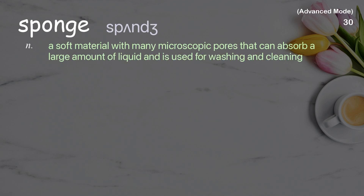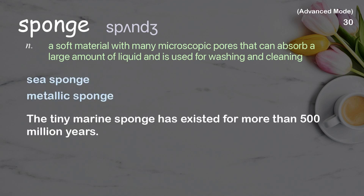Sponge: a soft material with many microscopic pores that can absorb a large amount of liquid, used for washing and cleaning. Examples: sea sponge. The tiny marine sponge has existed for more than 500 million years.